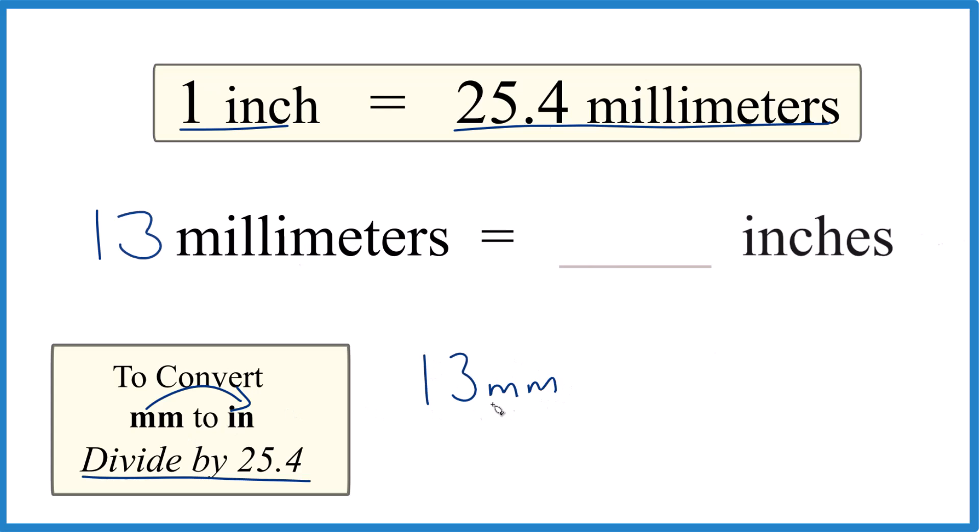and divide that by 25.4, which is 25.4 millimeters per inch. So all we do is divide 13 by 25.4, and we end up with 0.5118. Let's round it to 0.512, and